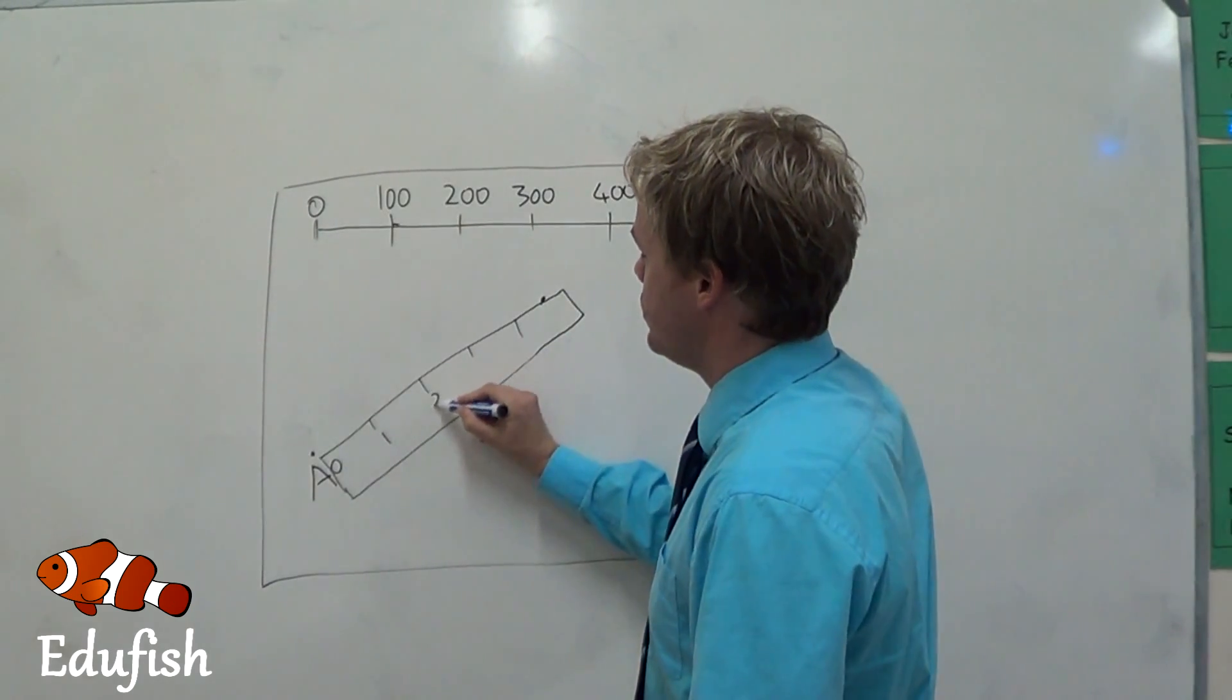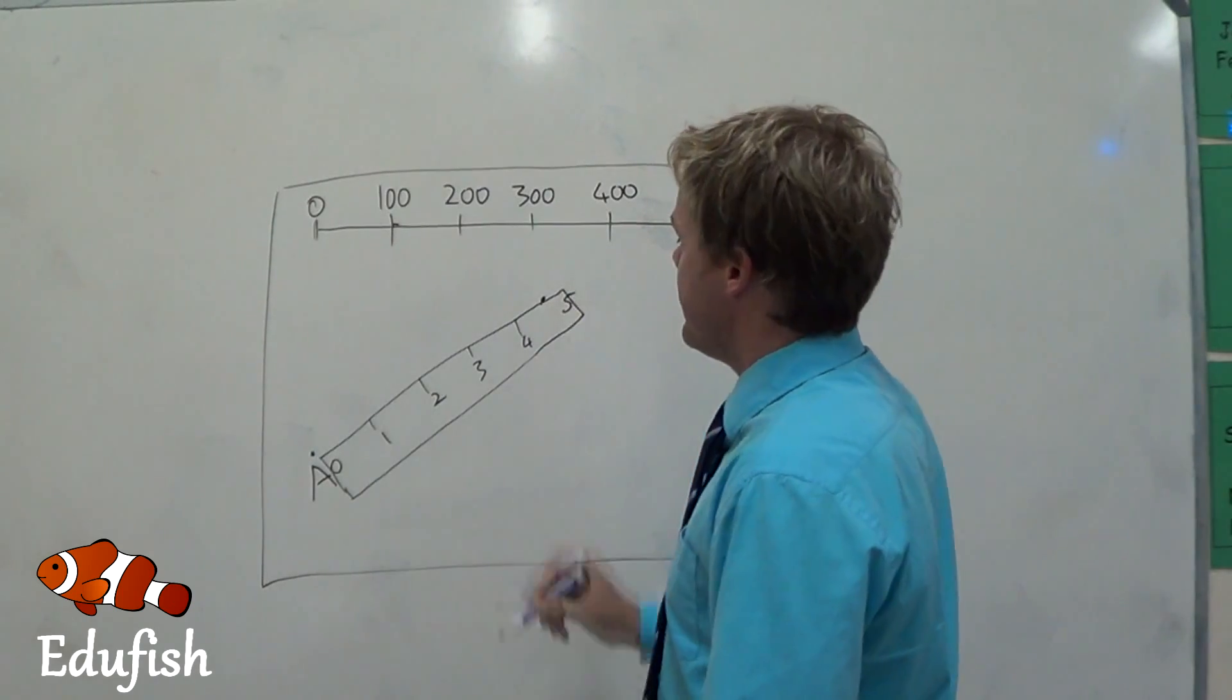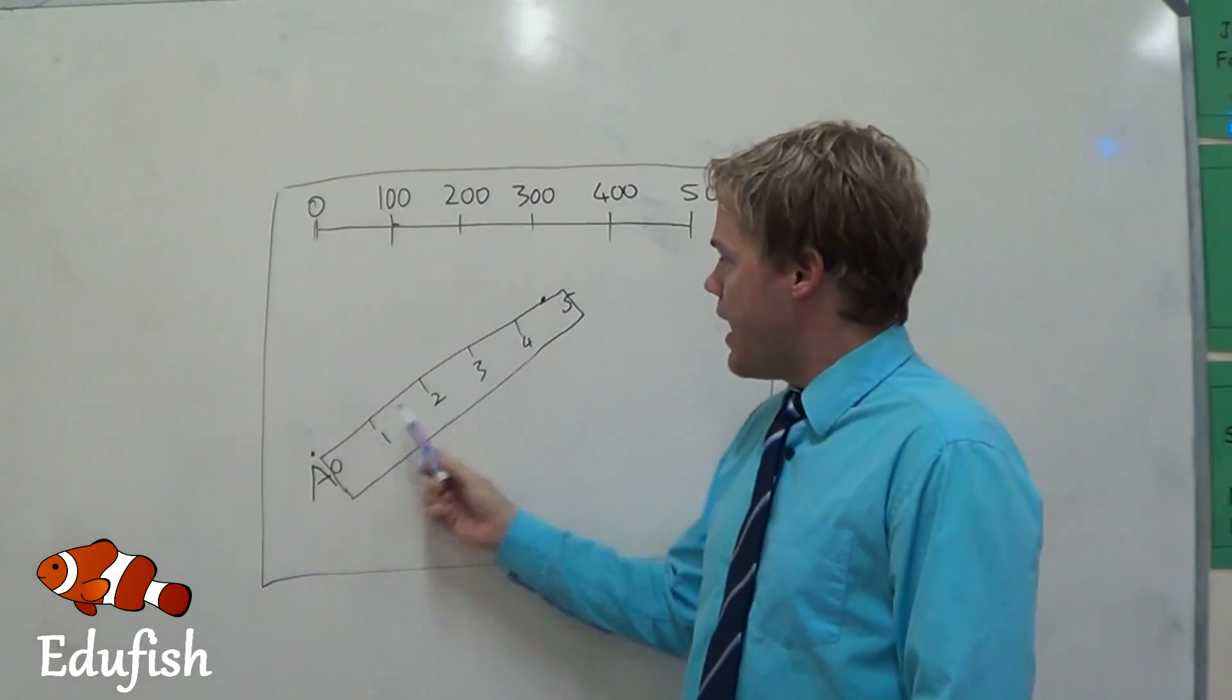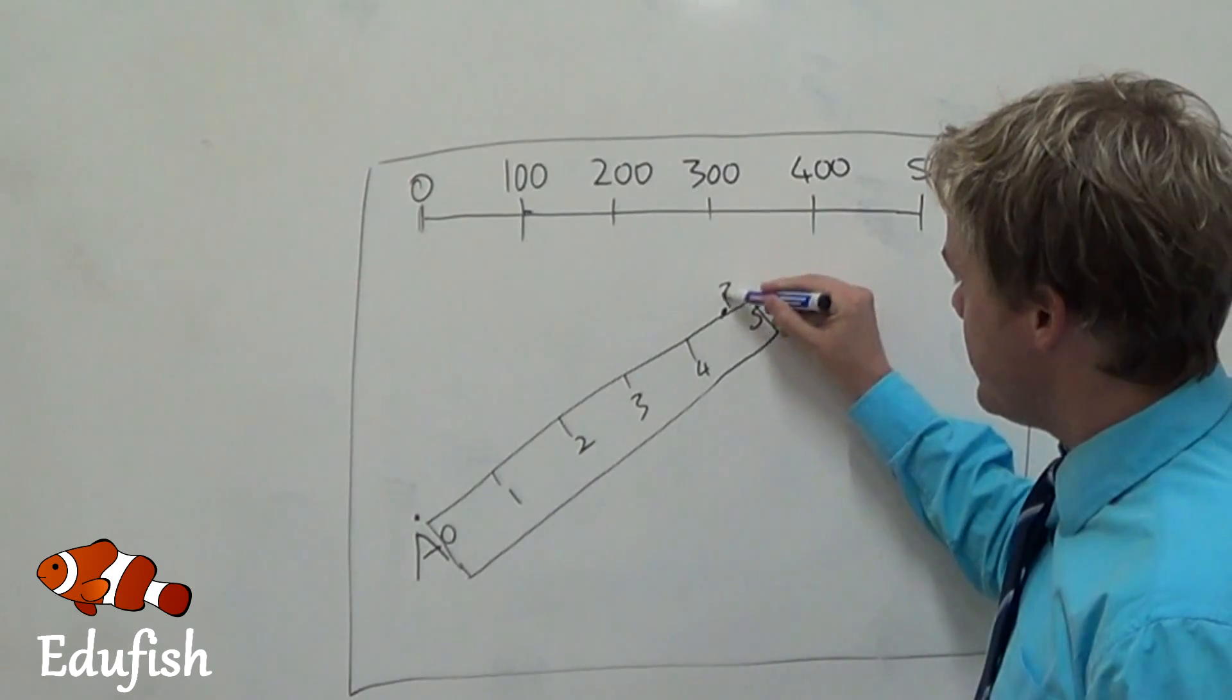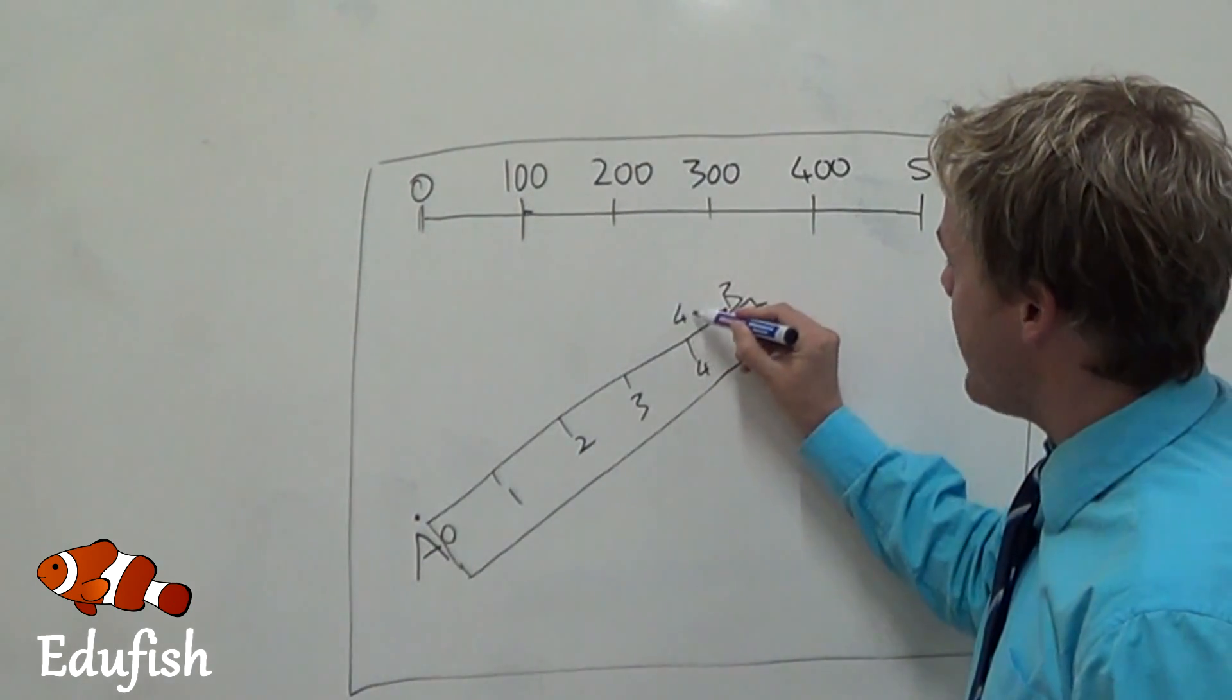Nought is here. 1, 2, 3, 4 and 5 is right there. Then it means that from point A to point B, it is roughly, let's make it 4.5 centimeters.